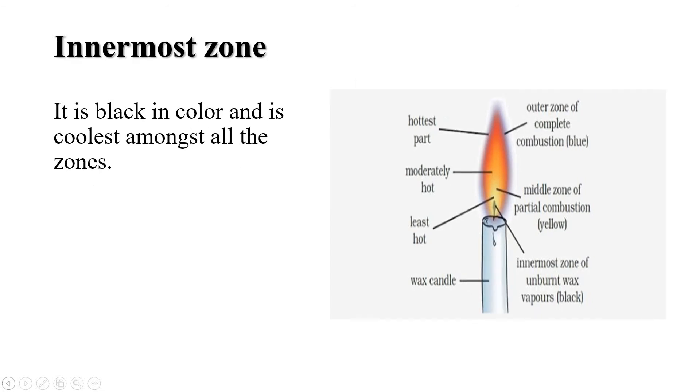The third part of the flame is innermost zone. The inner zone is a dark zone around the wick and it is also known as dark zone of no combustion. In this zone, very little or no combustion takes place because in this zone no air is present. This zone is dark or black due to the presence of unburned carbon particles in the wax vapor. This part of the flame is the least hot.